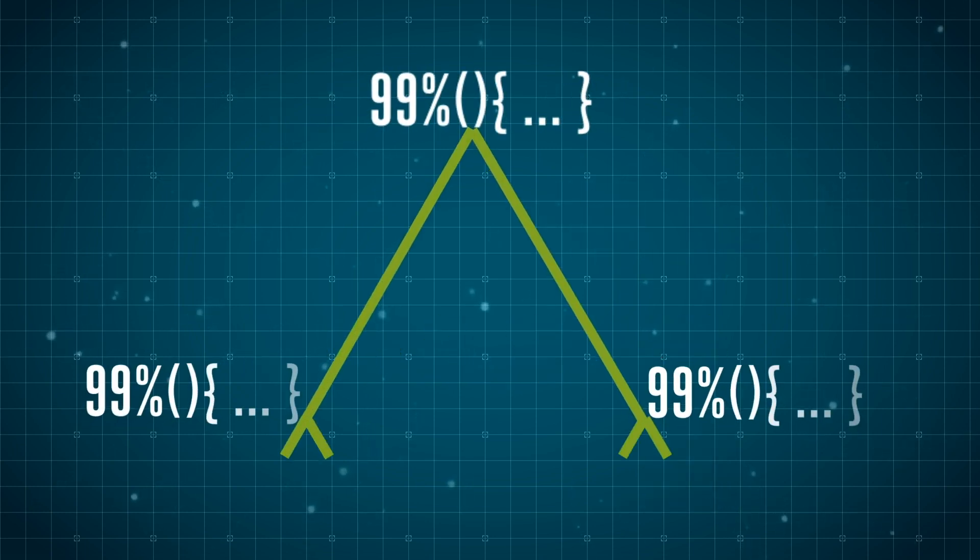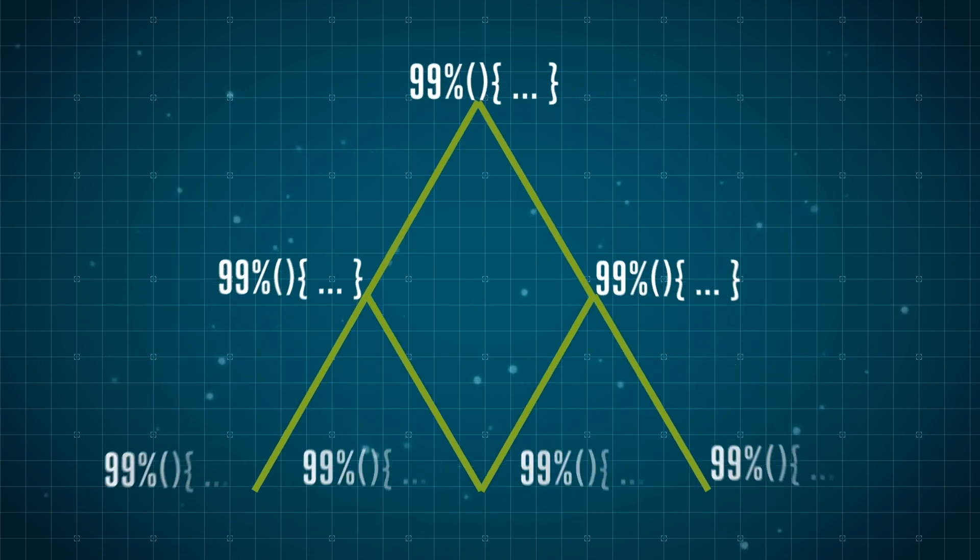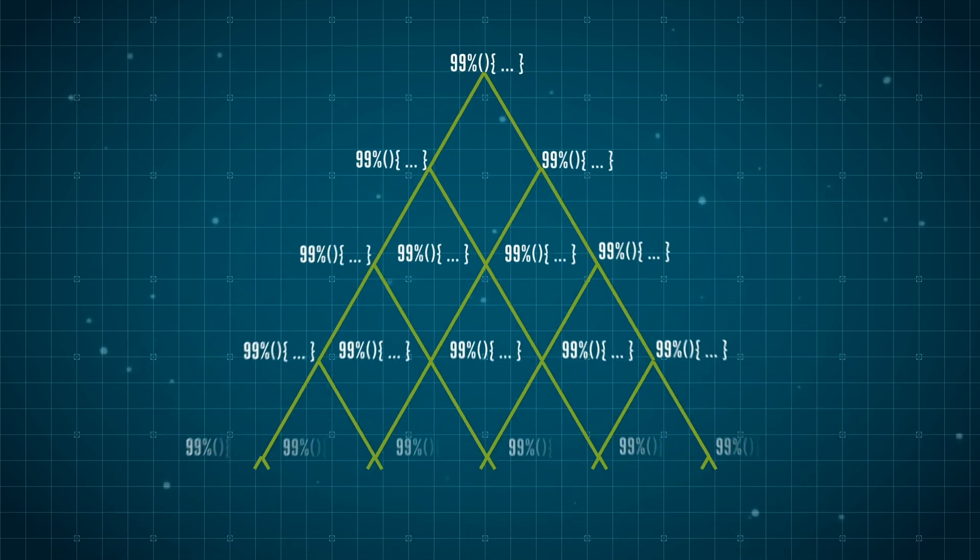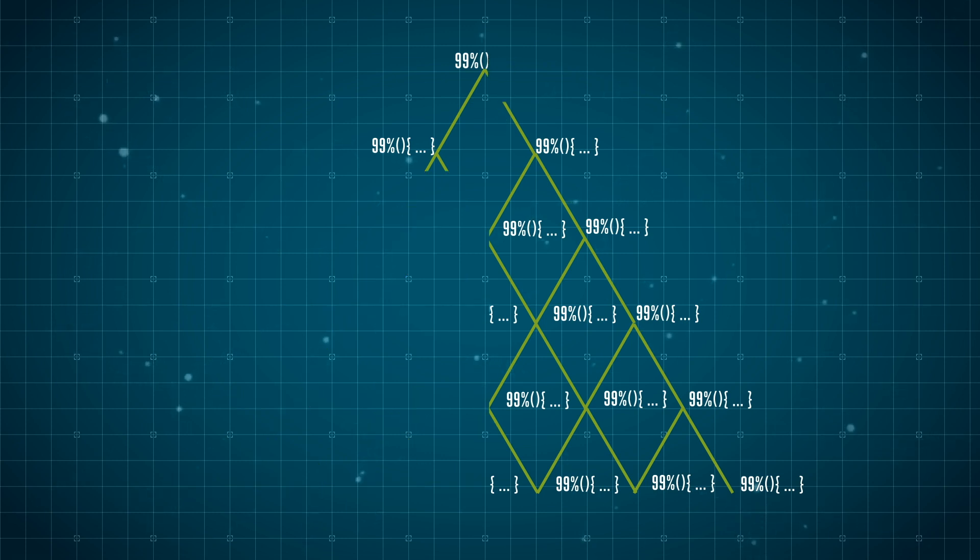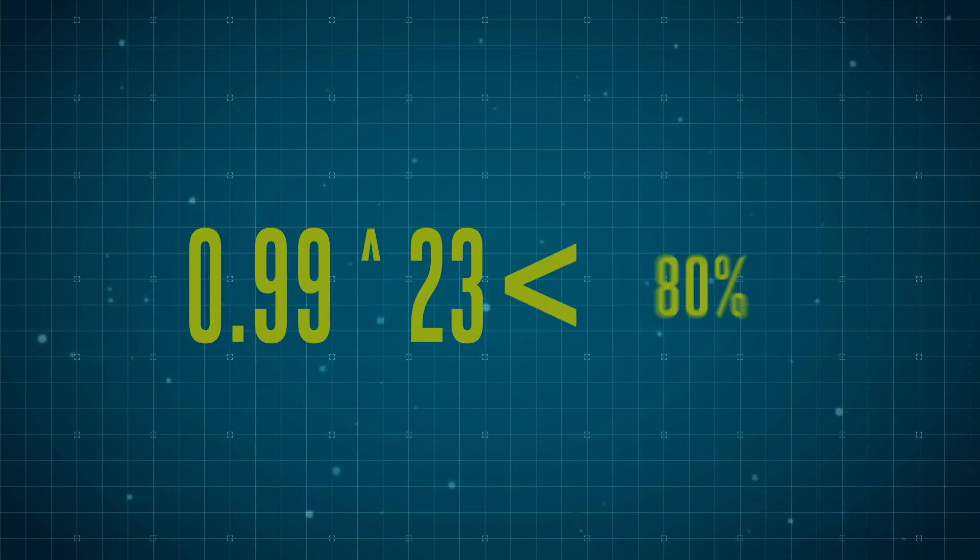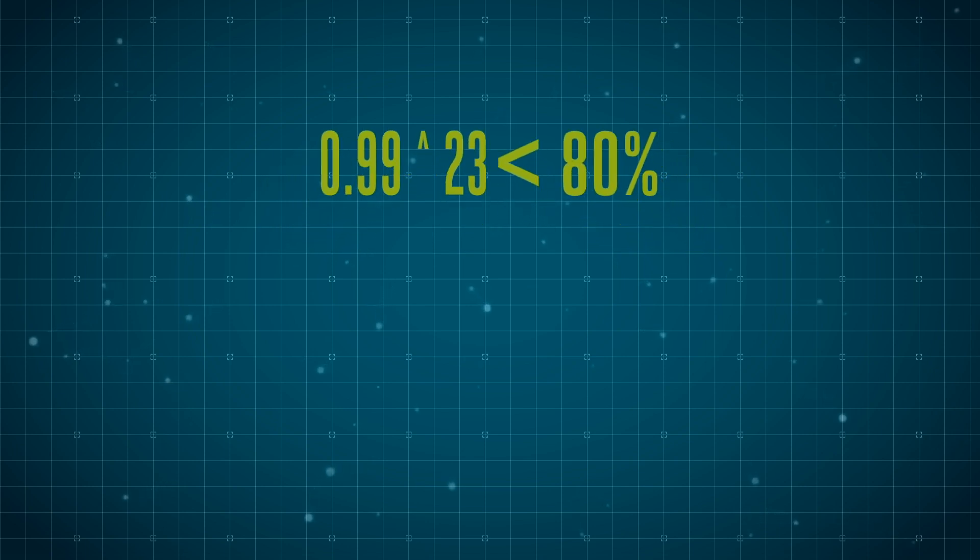Well, this might not initially sound like a common case, but consider a very abstract complex software program combining billions of algorithms together. Assume each algorithm has a 1% chance of not computing. You would only need to depend on 23 algorithms before your master algorithm has less than an 80% chance of computing successfully. Now imagine if that was a C program used to control your fighter jet mechanisms.